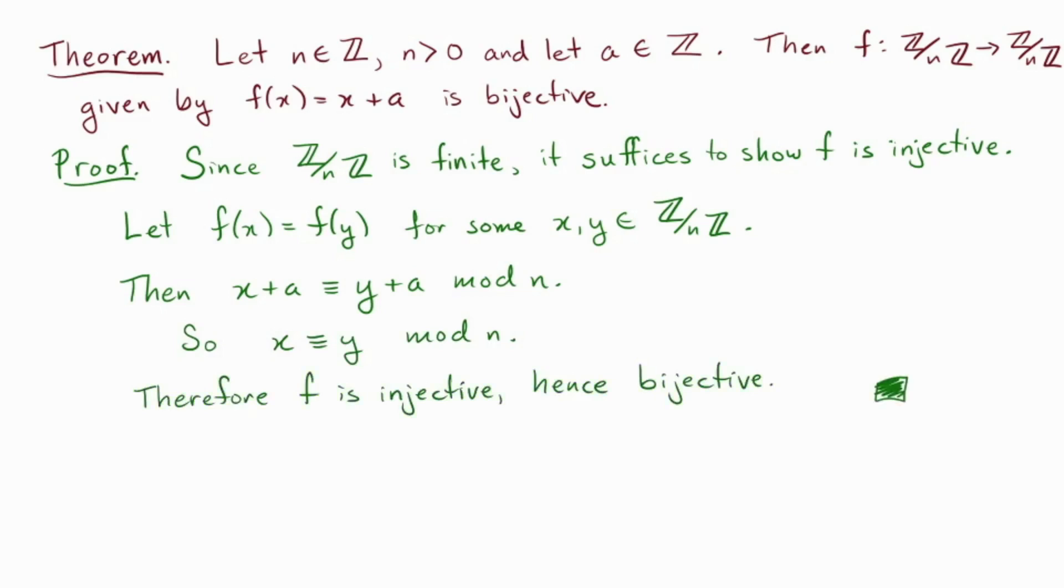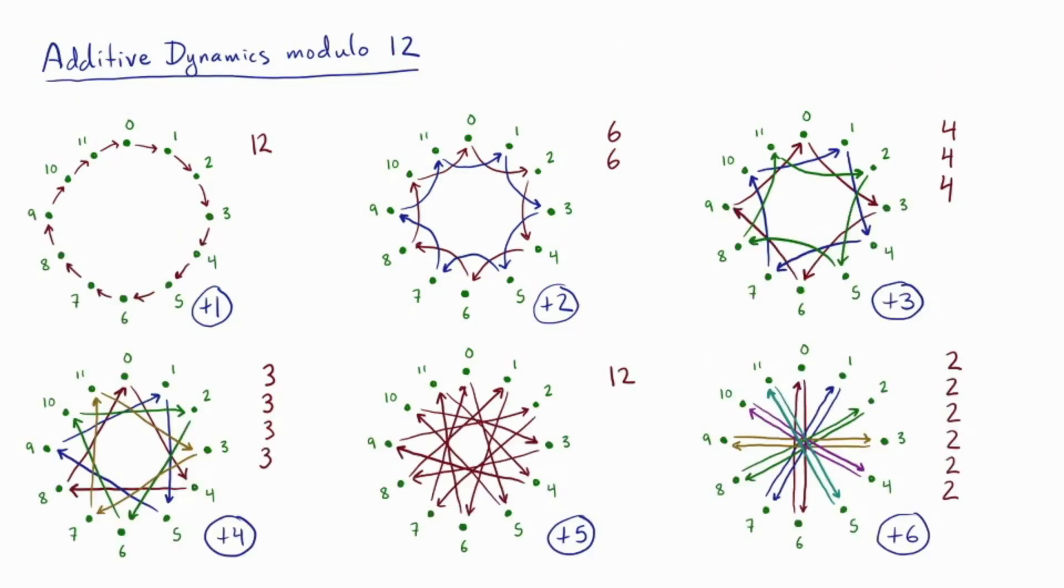Okay, great. We saw in the last video that for a bijective function, the dynamics will always be made up of cycles. So that means that what we've just proven is that the additive dynamics always consists of cycles. Okay, so let's go back to our data. Let's look again at the data we were just looking at. In our previous examples, and in these examples, notice that the cycles are always the same size.